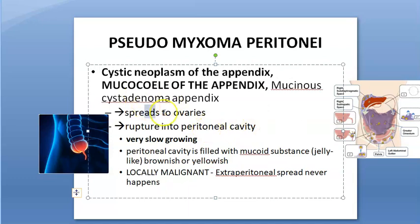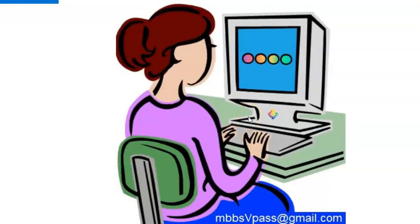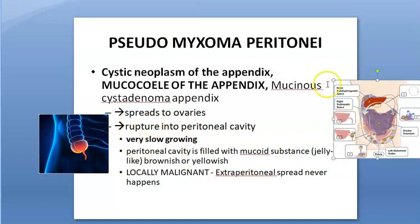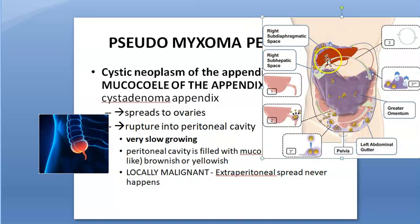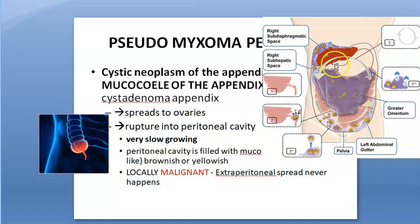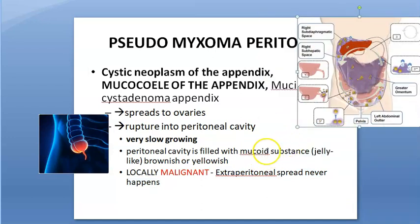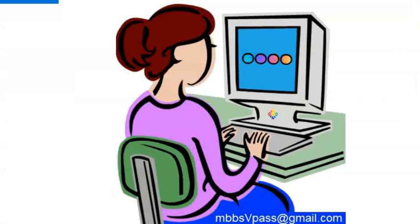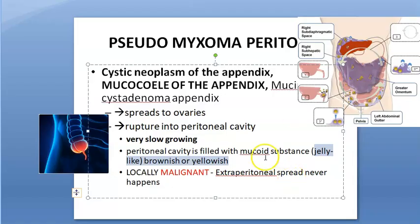This can also spread to the ovaries. Some people think it is coming from the ovaries, but most say it is from the appendix. This is very slow growing and locally malignant — extra-peritoneal spread will not happen, but within the peritoneum it is spreading. The peritoneal cavity is filled with mucoid substance — jelly-like brownish or yellow mucoid deposits. It is not fluid; it is mucoid substance, jelly-like.